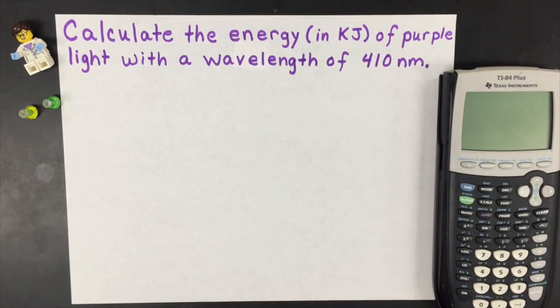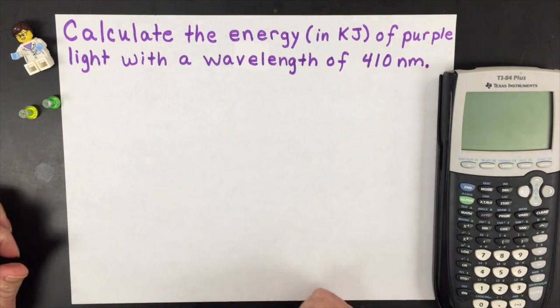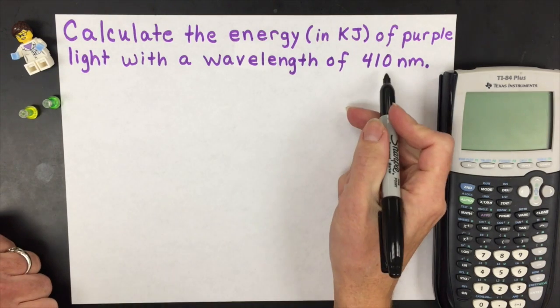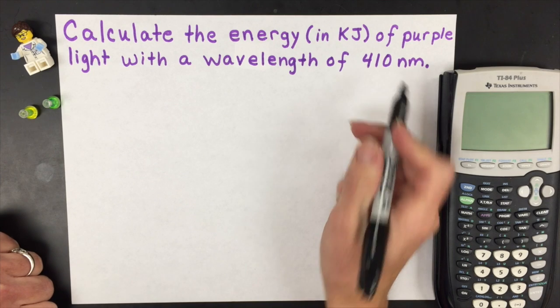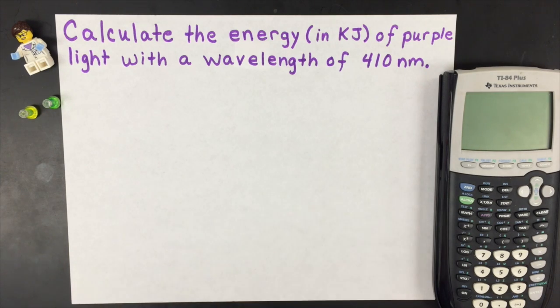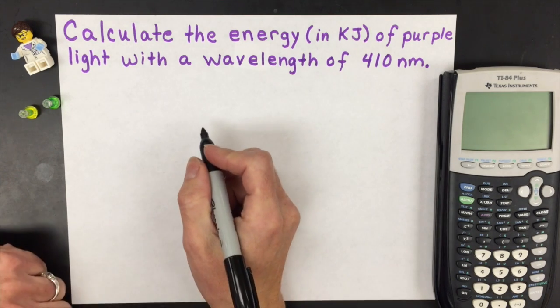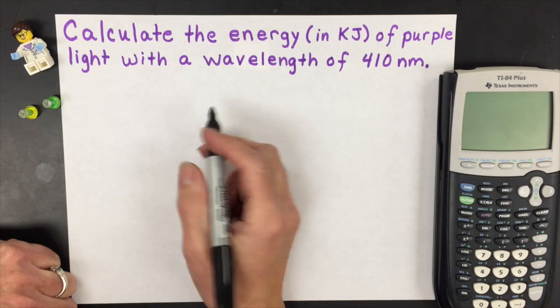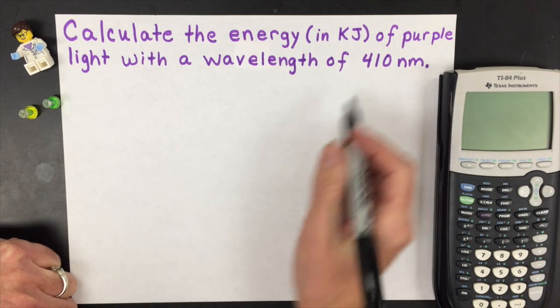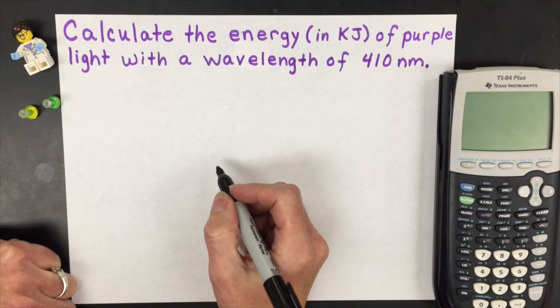We're going to do another calculation with electromagnetic radiation, and again I'm going to use a 410 nanometer wavelength purple light. The difference this time is I'm going to calculate the energy of that visible color that has a wavelength at 410 nanometers.